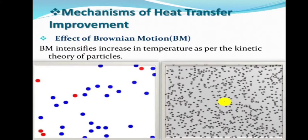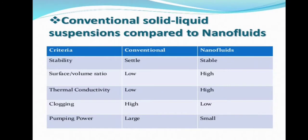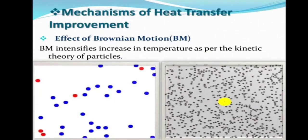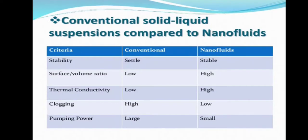Now, let me tell you some mechanisms of heat transfer improvement. The very first thing which I have is the effect of Brownian motion, which is BM. Brownian motion intensifies increase in temperature as per the kinetic theory of particles. The other one which excites me the most is clustering of nanoparticles. It results in fast heat transport along relatively long distances since heat can be conducted much faster by solid particles compared to liquid.